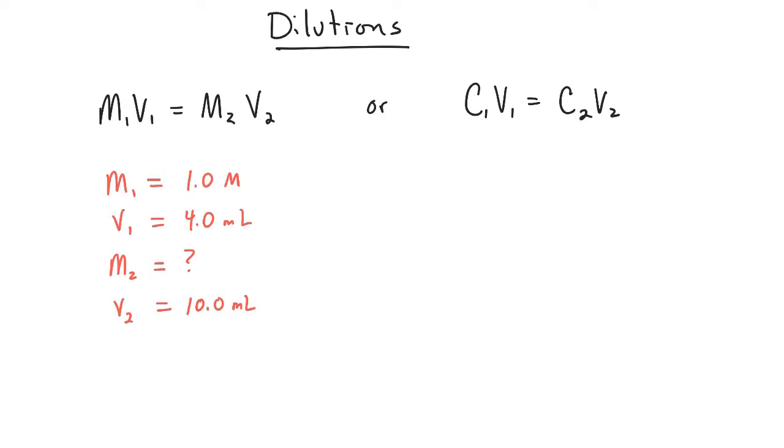And V1 is going to be the original volume, and we're going to do a 4 milliliter to 10 milliliter dilution, so the initial volume is going to be 4 milliliters.